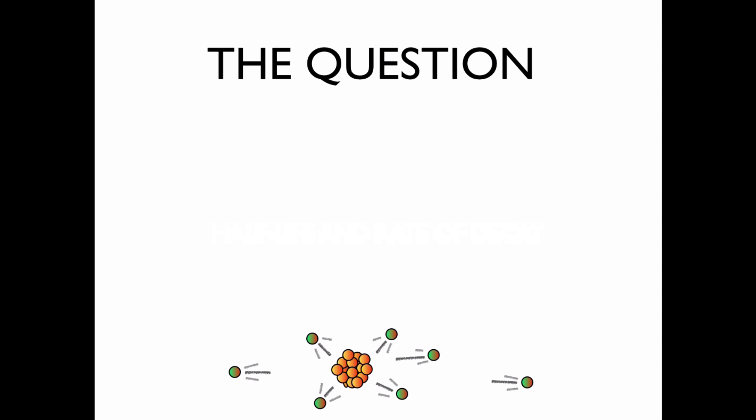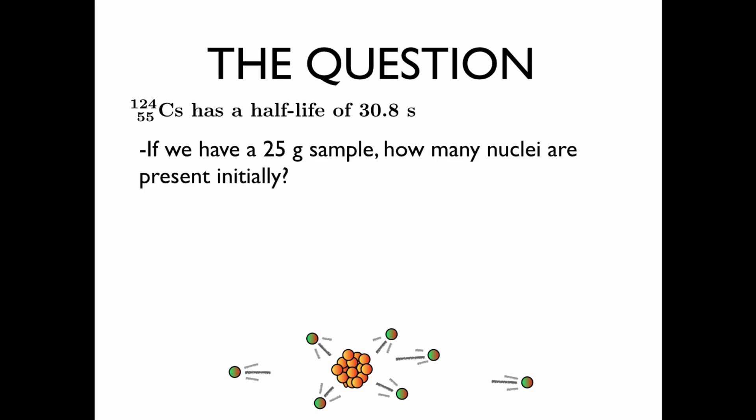The question: A radioactive isotope of cesium has a half-life of 30.8 seconds. If we have a 25 gram sample, we'd like to know how many nuclei are present initially, and after 5 minutes, how many are left.